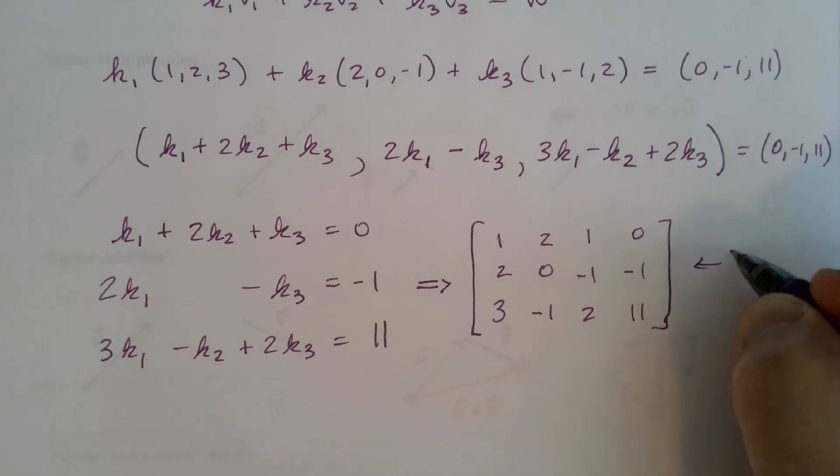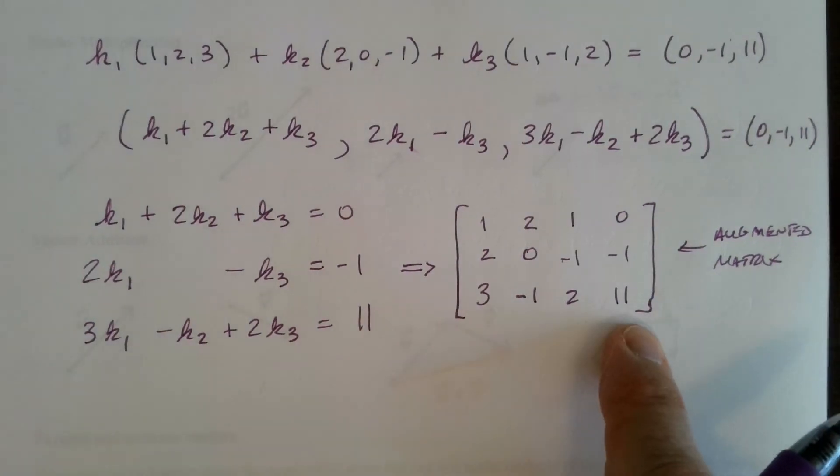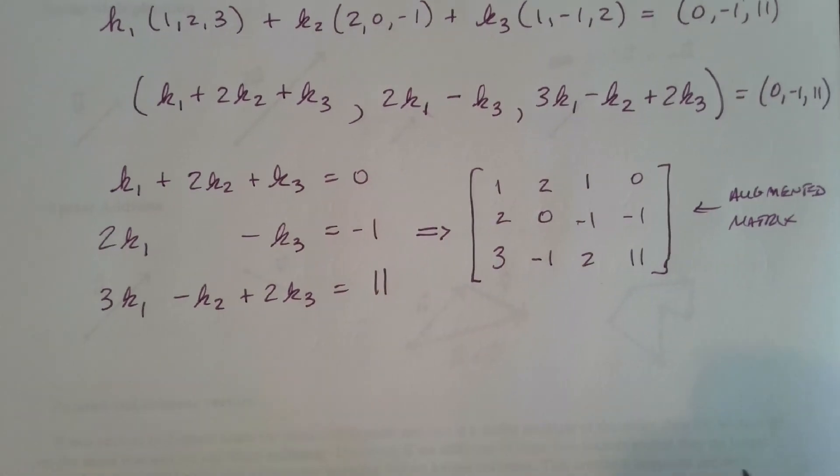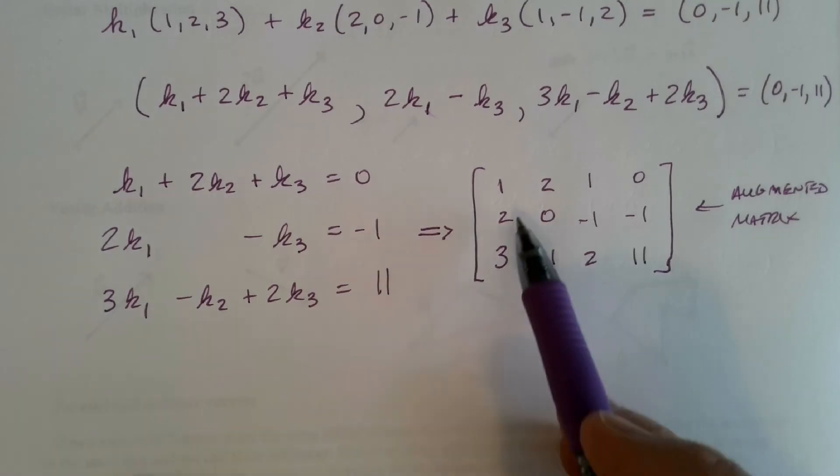All right. So this is the, remember, augmented matrix. Our coefficient matrix and our constants added, joined on to that. And then we can use Gauss-Jordan elimination to put this matrix in reduced row echelon form to help us solve the system.